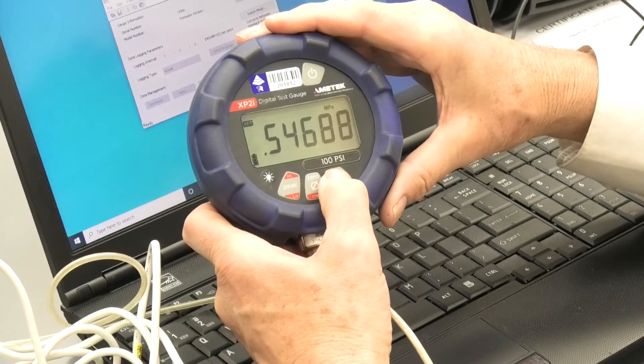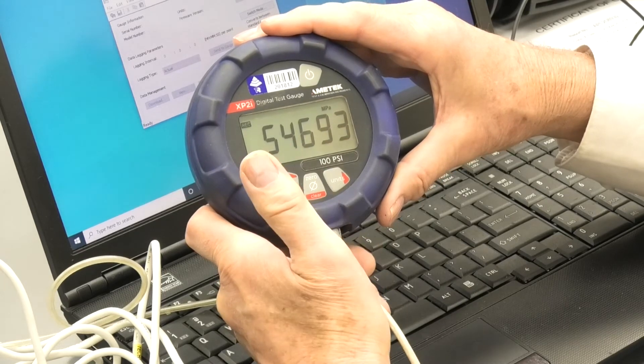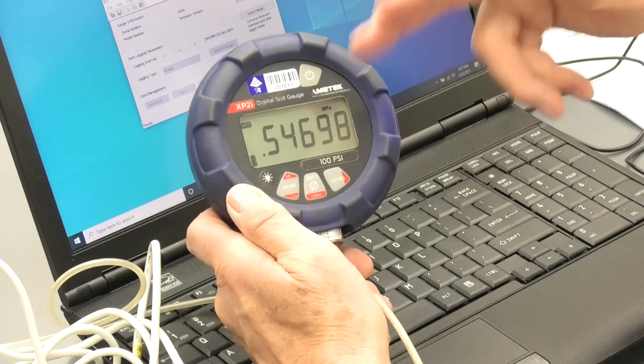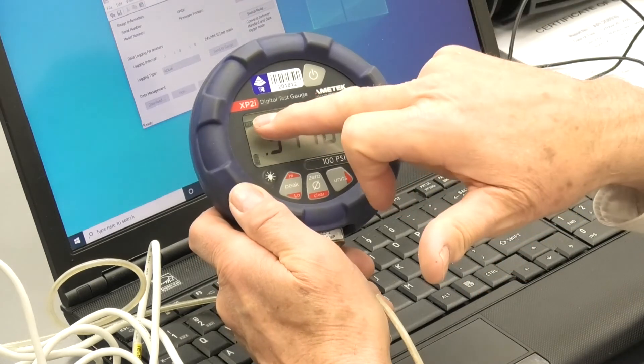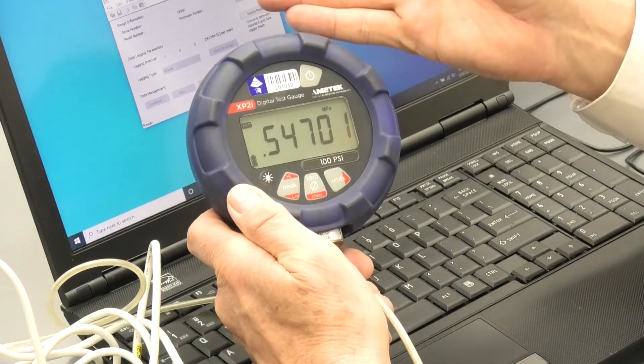Now to stop logging, I hold the units key down. And when it says stop, I take the button off. So I'm holding, pushing the units key down and it scrolls through start, stop, clear, etc. Now the record is no longer flashing. So in other words, we've stopped logging.